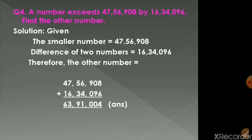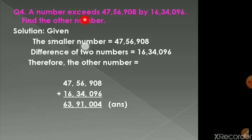Next, question number 4. A number exceeds 47,56,908 by 16,34,096. Find the other number. The word 'exceeds' means more than, so the number we need to find is more than 47,56,908 — that means 47,56,908 is the smaller number.